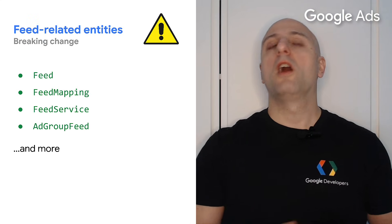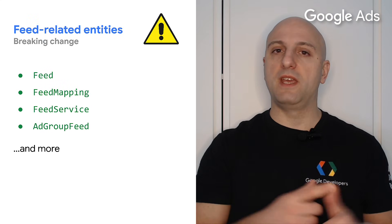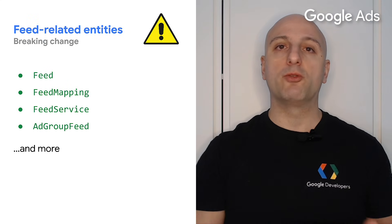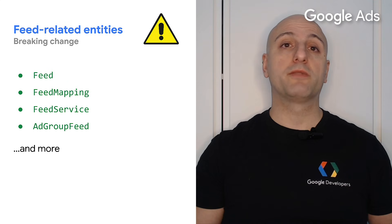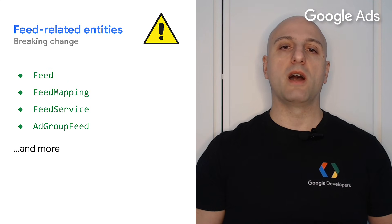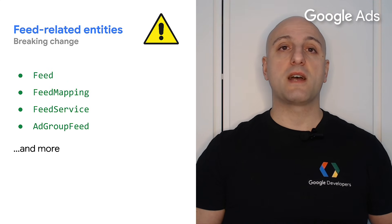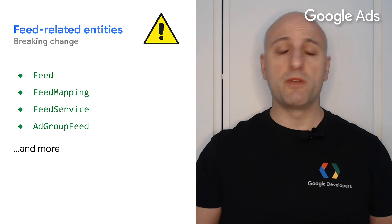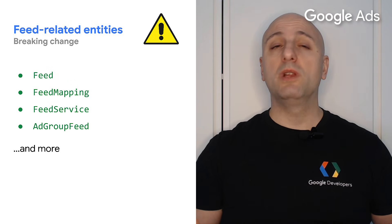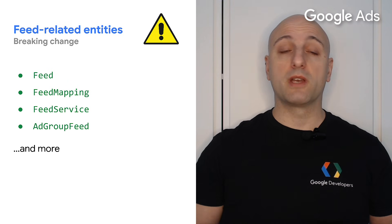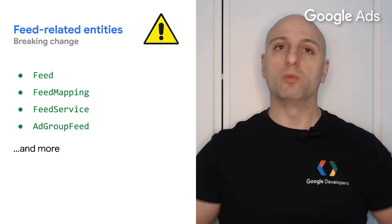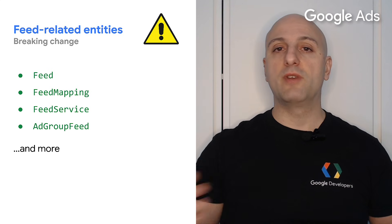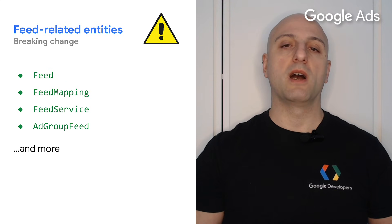Finally, all feed-related entities — such as feed, feed mapping, feed service, ad group feed, and others — have been removed from the Google Ads API. Feeds have been replaced by assets, and you should be using assets now if you aren't already. A link to the upgrade guide is in the video description below, which has the full list of feed-related entities that were removed from the API.